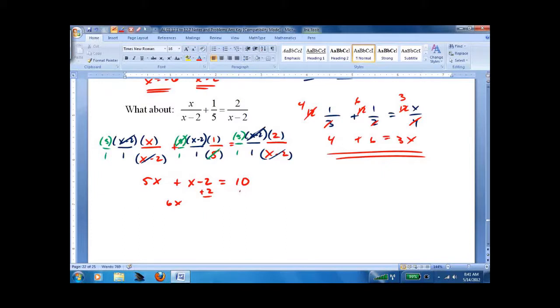6x equals 12 divided by 6, x equals 2. We should check this just in case this answer breaks our extraneous value rule. And lo and behold, it does. When I put it in the bottom here, I get 2 minus 2. That's 0.